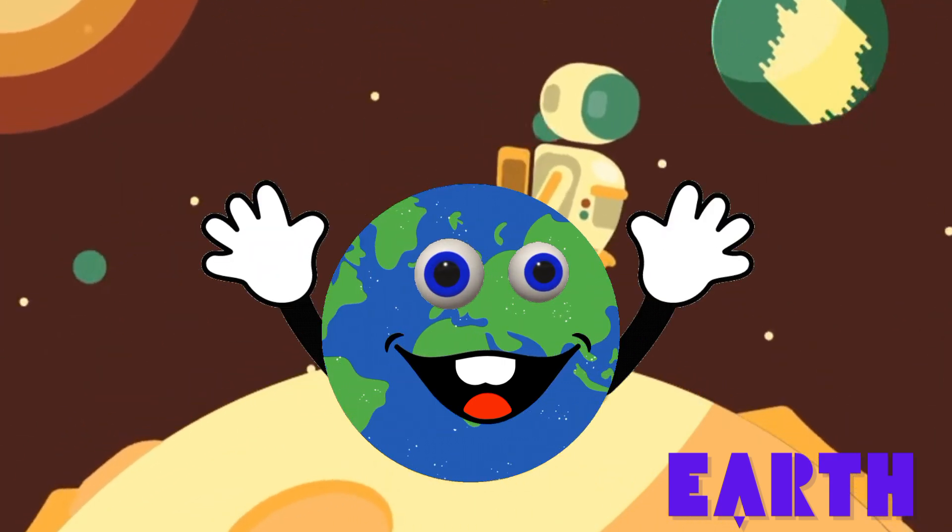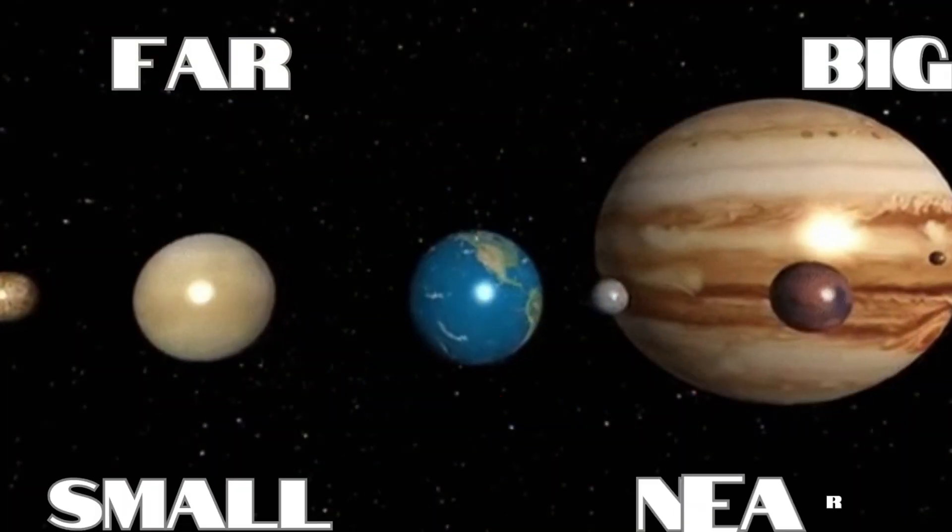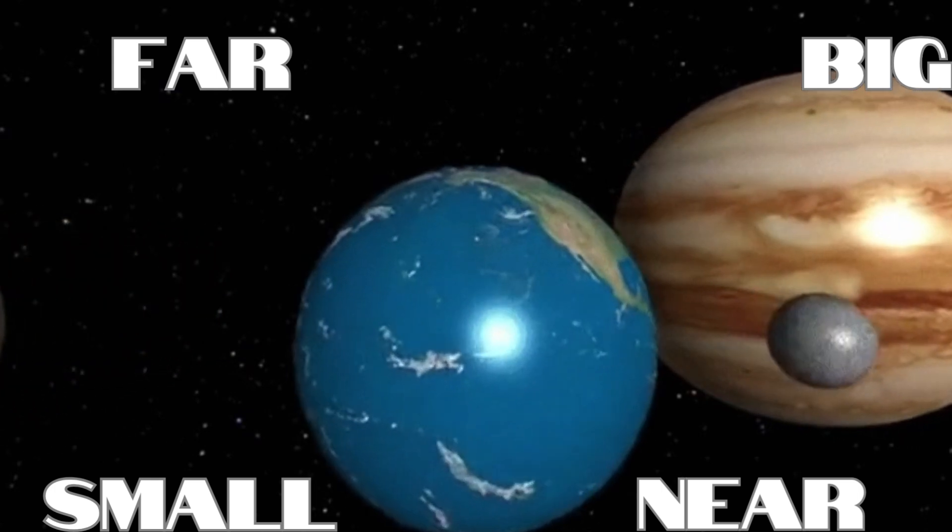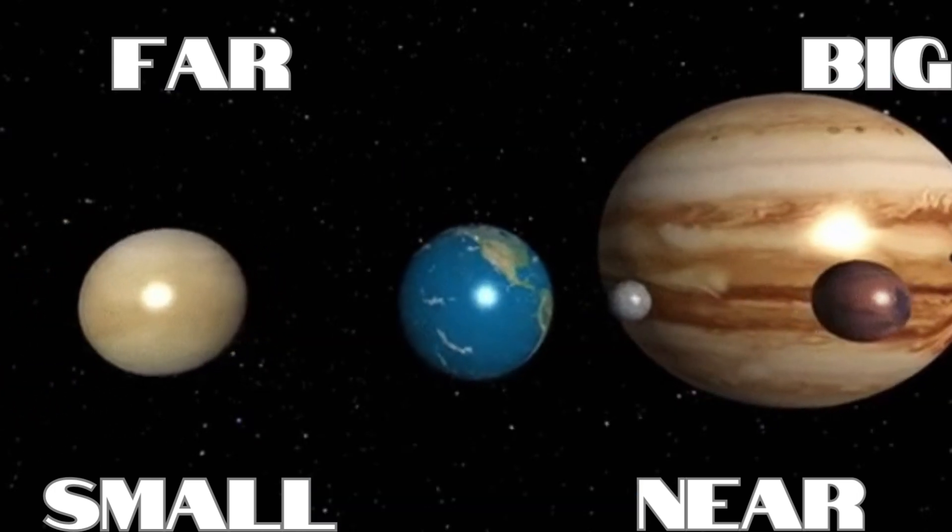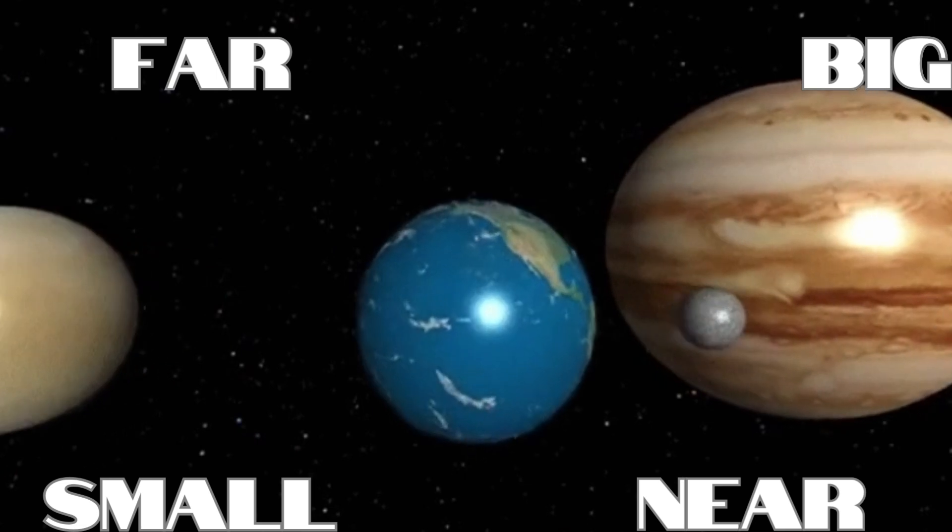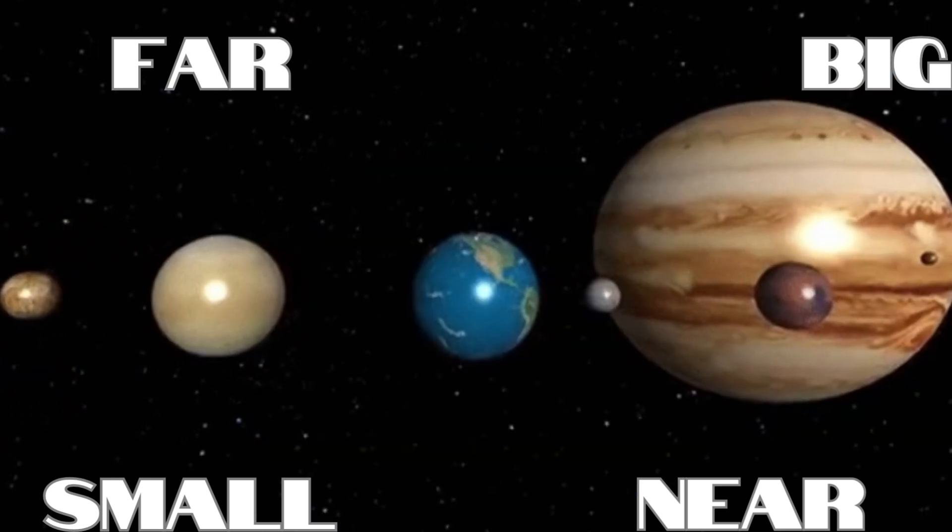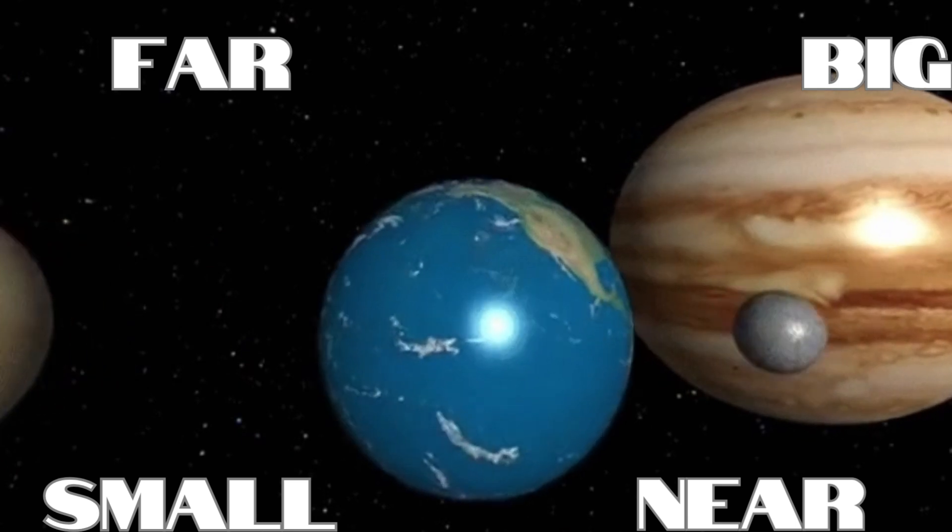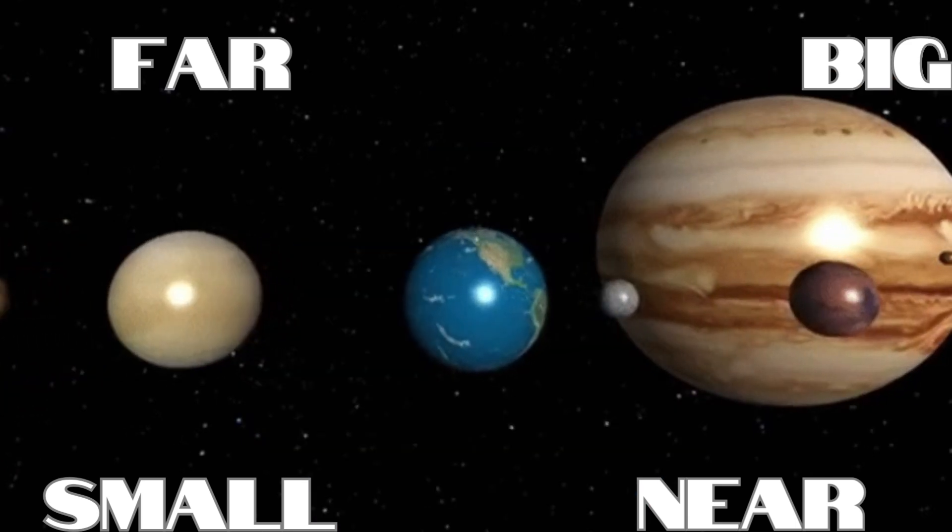Big and small, near and far. Planets spinning round the shiny star. Hot and cold, fast and slow.